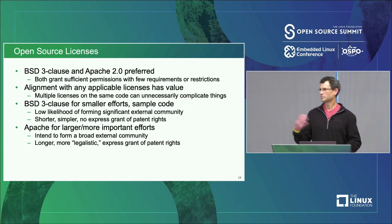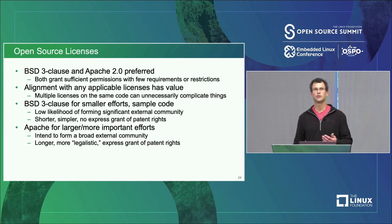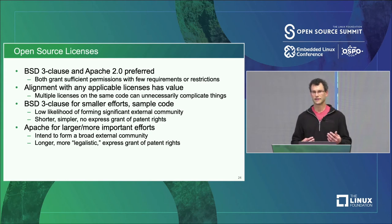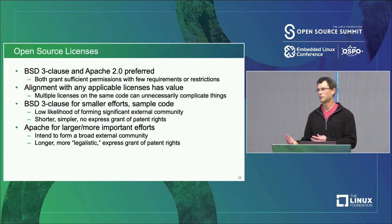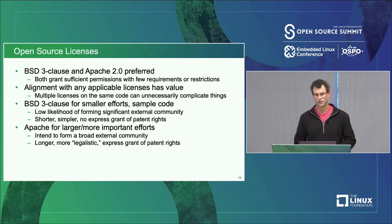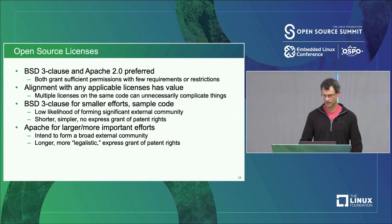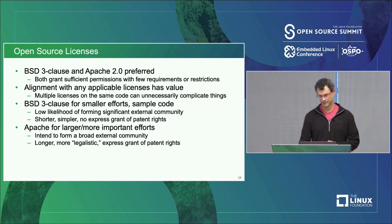For the larger projects — more typical of the Cisco GitHub org — we usually go with Apache. We use the Apache license because it provides a bit more structure and makes it easier for collaborators outside of Cisco to feel comfortable contributing, and for us to accept their contributions. We don't use it for really small projects because we don't feel it's worth the added complexity, but we do for the larger projects.